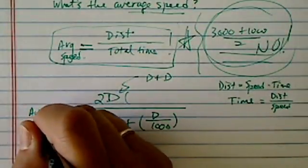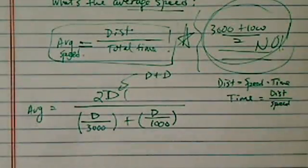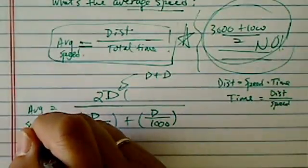As you can see, we're going to actually divide the d out so we don't really need to know what the distance was.